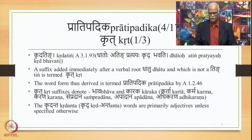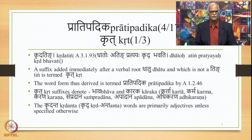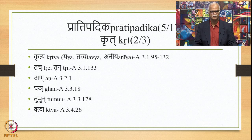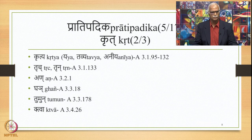The Krithanta words — meaning words at the end of which appears a Krith — are primarily adjectives unless specified otherwise. Here are some examples of Krith suffixes: Krithya is a big set of suffixes including Ya, Tavya, and Anir, in the section beginning with 3.1.95 up to 3.1.132. Then Trich stated in 3.1.133, Trun stated in 3.2.134, An stated in 3.2.1, Ghai stated in 3.3.18, Tumun stated in 3.3.178, and Tva stated in 3.4.26.